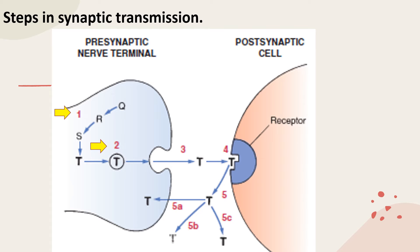Step two is the storage of transmitter in vesicles. Step three is the release of transmitter — in response to an action potential, vesicles fuse with the terminal membrane and discharge their contents into the synaptic gap. Step four is action at receptor: the transmitter binds reversibly or irreversibly to its receptor on the postsynaptic cell, causing a response. Step five is termination of transmission: the transmitter dissociates from its receptor and is removed from the synaptic gap by reuptake into the nerve terminal, enzymatic degradation, or diffusion.